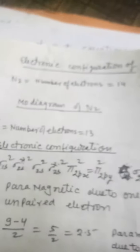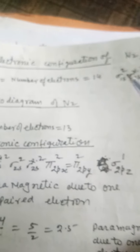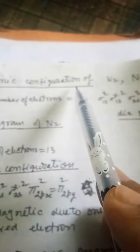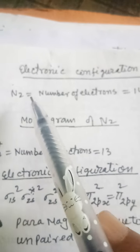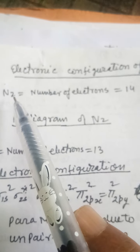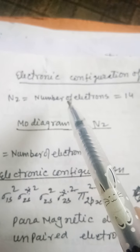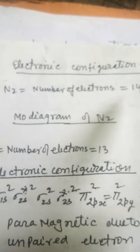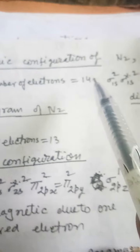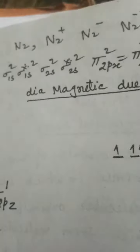Now we shall discuss the different electronic configurations of different molecules. For example, the electronic configuration of the nitrogen molecule. If somebody asks you what is the electronic configuration of the nitrogen molecule, first of all you have to consider how many electrons are present. There are 14 electrons in the nitrogen molecule. So how are these 14 electrons distributed in different molecular orbitals?